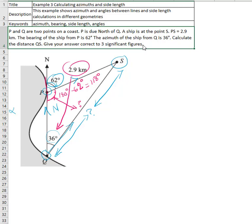Setting up the equation: 2.9 kilometers divided by the sine of the opposite angle, which is 36 degrees, equals the unknown side over the sine of 118 degrees. Rearranging, we find that QS distance equals...